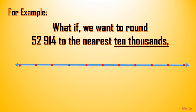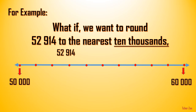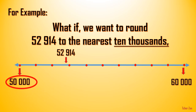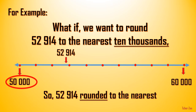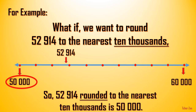Now, this will be our number line. Since we said we want to round it off to the nearest ten thousands, 52,914 could be rounded off to either 60,000 or 50,000. Now, 52,914 is somewhere here. Is it nearer 60,000 or 50,000? As you can see, 52,914 is nearer 50,000. So, 52,914 rounded to the nearest ten thousands is 50,000.